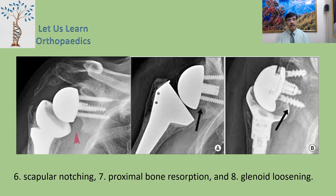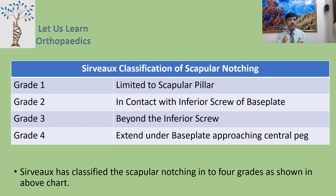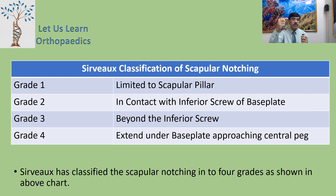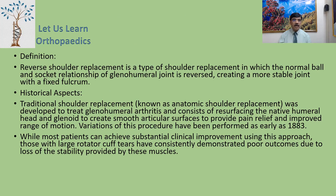The Sirveaux classification of scapular notching consists of four grades: Grade 1 is limited to the scapular pillar; Grade 2 is in contact with the inferior screw of the base plate; Grade 3 extends beyond the inferior screw; and Grade 4 extends under the base plate and approaches the central peg.